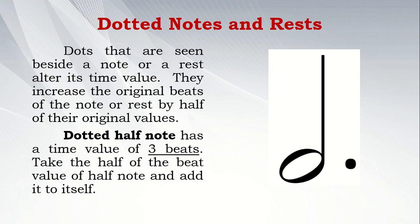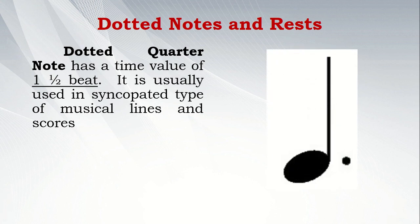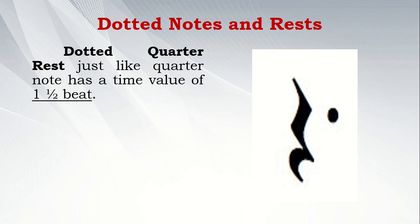Dots seen beside a note or a rest alter its time value — they increase the original beats of the note or rest by half of their original values. A dotted half note has a time value of three beats: take half the beat value of the half note and add it to itself. A dotted quarter note has a time value of one and a half beats; it is usually used in syncopated types of musical lines and scores. A dotted quarter rest, just like the dotted quarter note, also has a time value of one and a half beats.